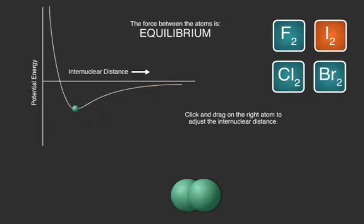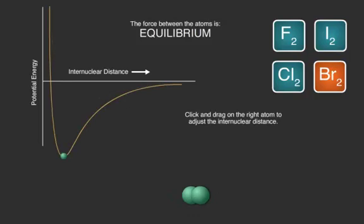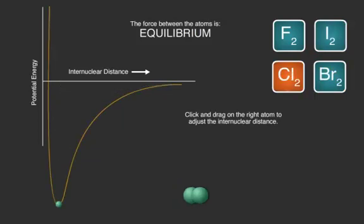Since the disassociation energy is the amount of energy it takes to go from minimum potential energy to the separated atoms, and the well is bigger for bromine, we would say that the bromine molecule has a stronger bond than iodine. And chlorine has an even stronger bond, as it would take even more energy to separate chlorine into its individual atoms.